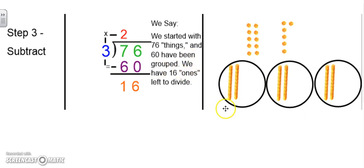So we started with 76 things, and 60 have been grouped. So 76 minus 60 is 16. I have 16 ones left to divide.